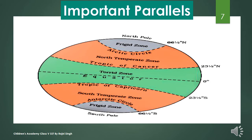We already know about the equator at 0°, the north pole at 90° North, and the south pole at 90° South. There are four other important parallels: the Tropic of Cancer at 23½° North, the Tropic of Capricorn at 23½° South, the Arctic Circle at 66½° North, and the Antarctic Circle at 66½° South.